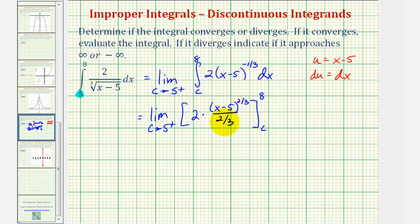But instead of dividing by two-thirds, we can multiply by the reciprocal of three-halves. Two times three-halves equals three. So we can write this as limit as c approaches five from the right of three times the quantity x minus five to the two-thirds.